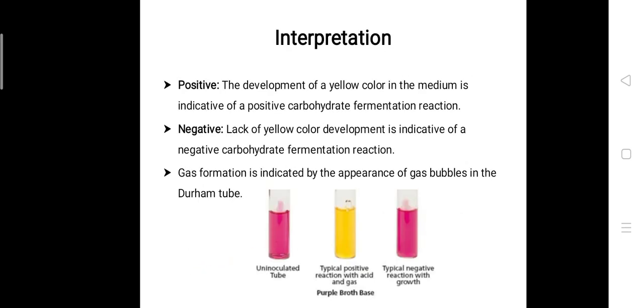Coming to the interpretation, you can see three slides, but we will focus mainly on the typical positive reaction and typical negative reaction. The uninoculated tube serves as a control. In a positive result, the development of a yellow color in the medium is indicative of a positive carbohydrate fermentation reaction. We will first discuss acid production, then gas production.